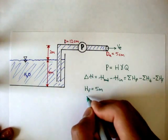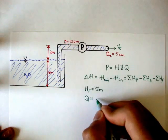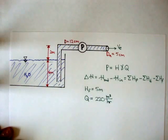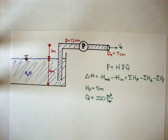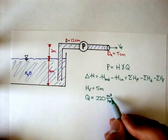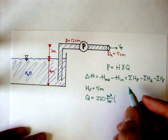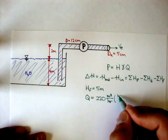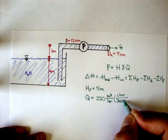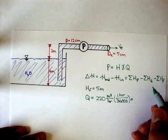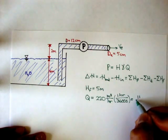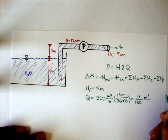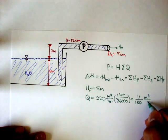They also gave us our volumetric flow rate, which was 220 meters cubed per hour. I want to change this to meters cubed per second for consistent units. In one hour there are 3600 seconds, so doing the math — keeping it as a fraction — we get 11 over 180 meters cubed per second. That's our flow rate.